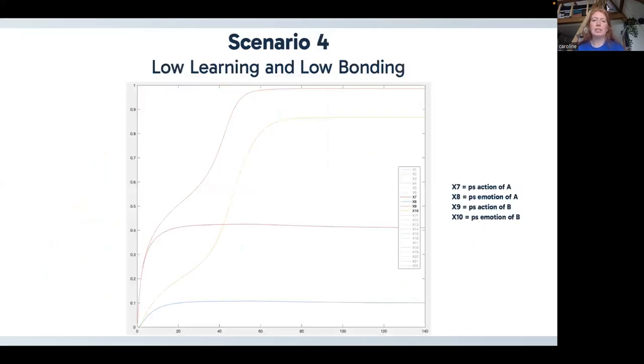And our last scenario has low learning and low bonding. And we can see those results are a little similar to our scenario two, where we see that there again is no joint decision between the two agents.